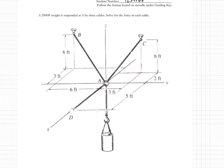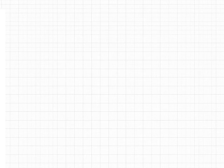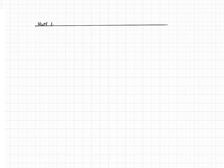So we've got a weight of 2,000 pounds suspended by three cables. Cable AD is the one that is only in the X coordinate. I'll do this full-fledged as if I had a sheet of paper. We'd write Homework 4 on it and title it 'Equilibrium at a Point'.